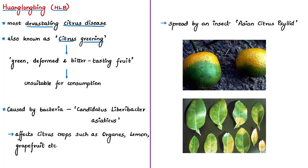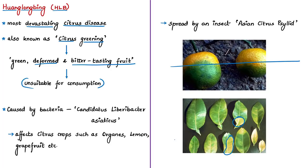This disease is also called citrus greening disease — so named because the citrus fruits become green in color in the bottom half, while the leaves of the plant become yellow. As a result of this infection, the fruits undergo deformation; one side of the fruit will be smaller than the other side, and such fruits are bitter-tasting and unsuitable for human consumption either as a fruit or as juice. Some fruits may fall prematurely, and some fruits remaining in the tree do not color properly. The disease is caused by a bacterium named Candidatus liberibacter asiaticus.